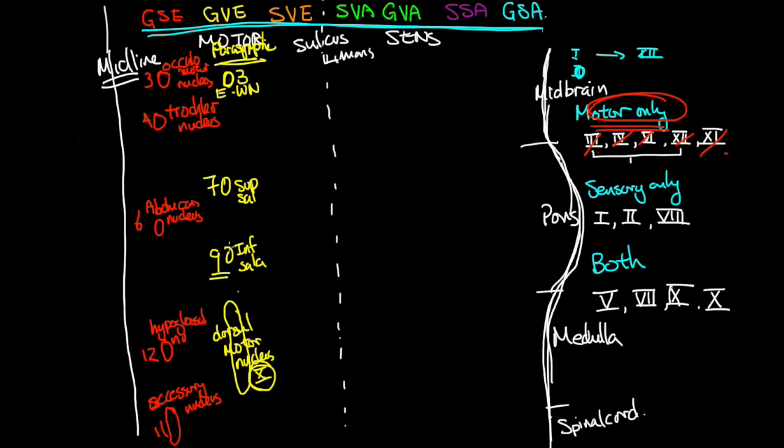That's the general visceral efferent, and then now we move on to the special visceral efferents. So these are the guys that innervate the muscles of the face as well as other swallowing structures and other things. Let's start off with the very first one, which would be the trigeminal nucleus, trigeminal motor nucleus. That would be number 5, cranial nerve number 5.